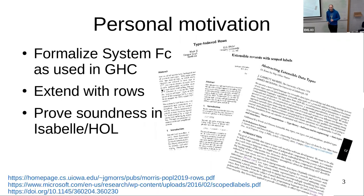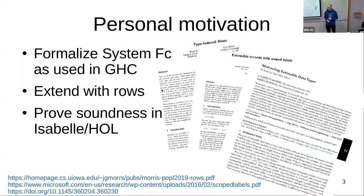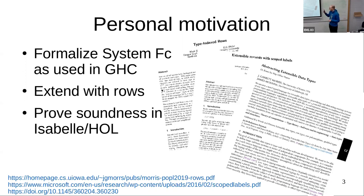My personal motivation is that in my PhD I want to formalize System FC as it is used for Haskell Core in Isabelle, and then extend that with row types so we can eventually get row types in Haskell itself. The problem is I started formalizing System F in Isabelle with Nominal 2 and hit some roadblocks.